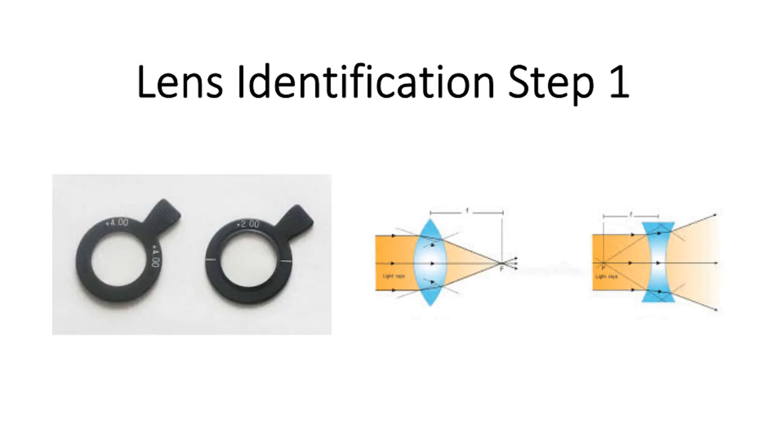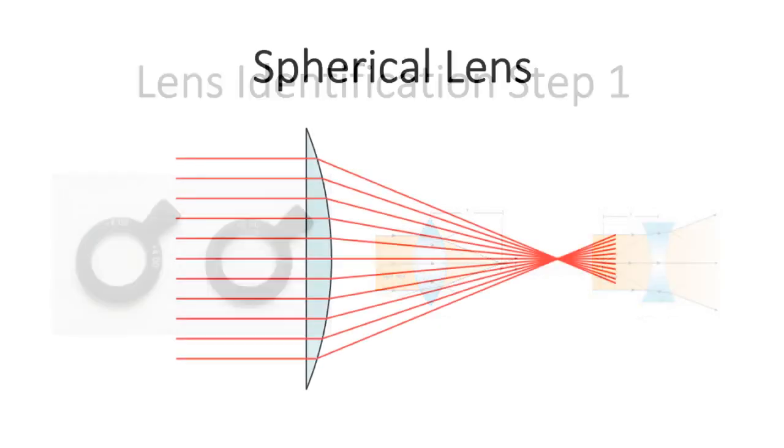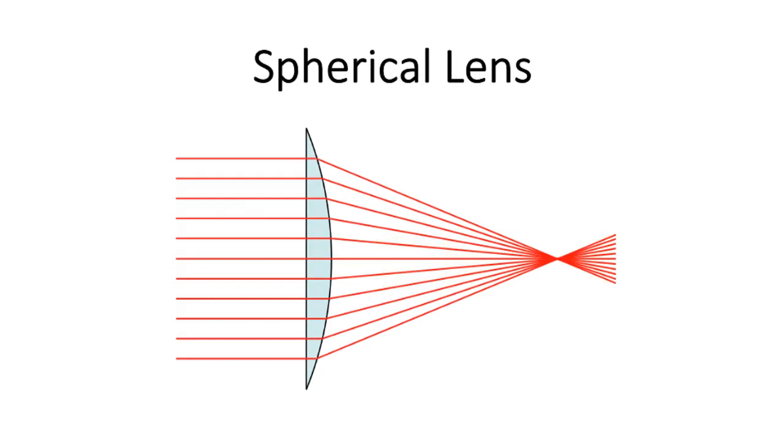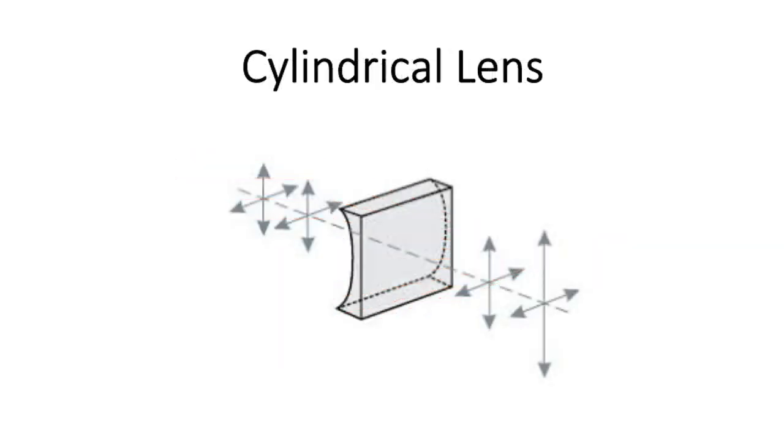How do you know if a lens is spherical or cylindrical? Spherical lenses focus light onto a point, whereas cylindrical lenses stretch images by focusing light onto a one-dimensional plane like a line.